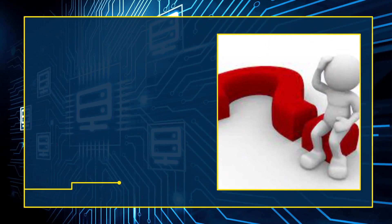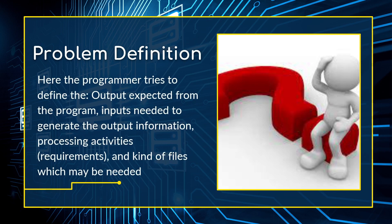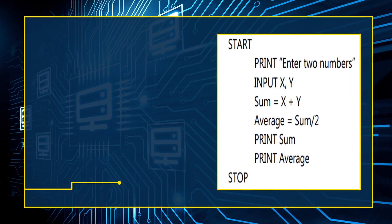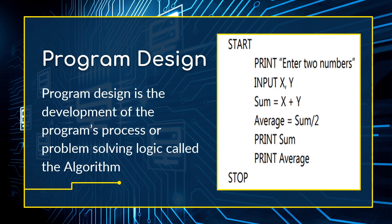Having understood the problem, in the second step you will have to define the problem. The definition here entails identifying the input you will need to solve that problem, what output it will yield, and the logical steps you are going to follow. After understanding and interpreting the problem, you outline the input and output required to solve it. In step three — program design — we develop the program process by outlining all the logical steps we will follow to solve the identified problem.